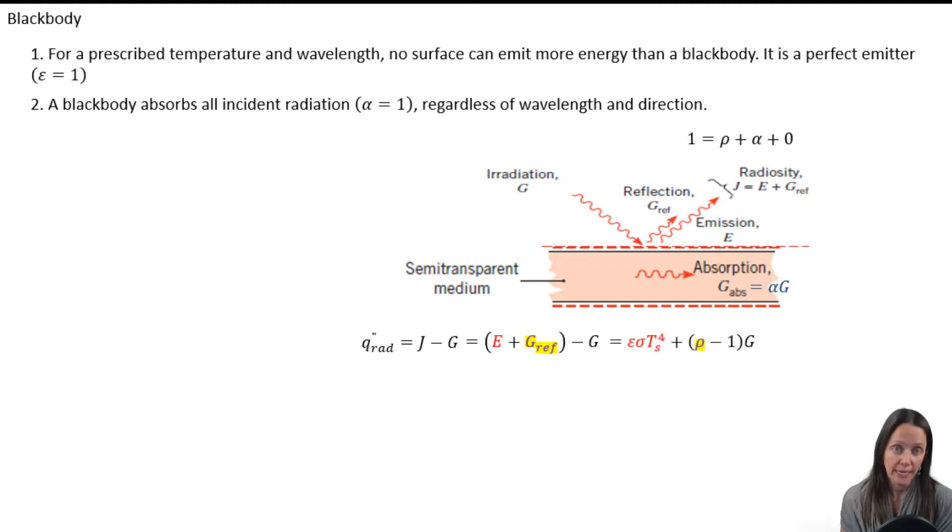And next, we define the emitted radiation according to the Stefan Boltzmann law using the emissivity, which could be anywhere from zero to one. And it would be, of course, one for a black body. And then we also note that the reflected radiation is the reflectivity, rho, times G, the irradiated radiation that is incident on the surface. And then finally, noting that rho minus one is negative alpha, we arrive at the exact same equation that we took for granted way back in Chapter 1.